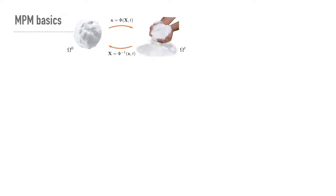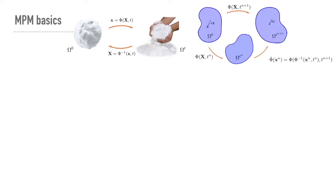MPM uses a deformation map between a material space omega-zero and the deformed space omega-t at time t. This phi map takes the original location and maps it to a new location. MPM uses an updated Lagrangian framework different from finite elements: it assumes an intermediate state at the current time t_n, and as things evolve, the deformation is partitioned into previous and next states. The physical equations are evolved forward by updating deformation from the previous state to the next, rather than recomputing from the original state. This allows tracking really large deformations without needing to remember the original shape — useful for materials like sand and water that don't have a meaningful rest shape.